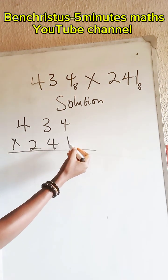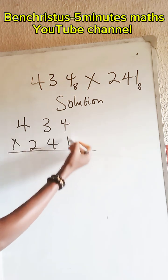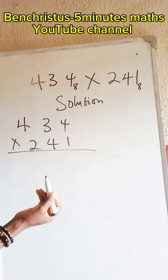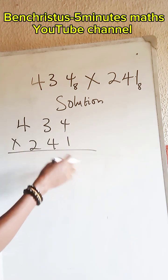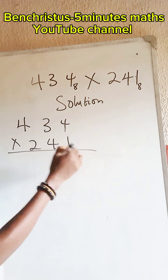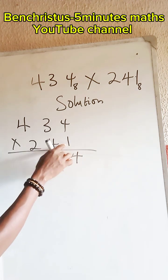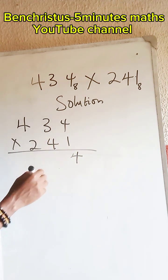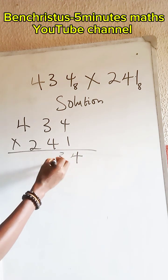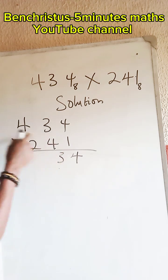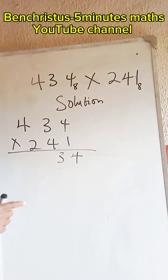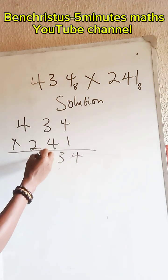Starting with the first digit: 1 times 4 is 4 — not up to 8, so we write 4. 1 times 3 is 3 — not up to 8, we write 3. 1 times 4 is 4 — not up to 8, we write 4.